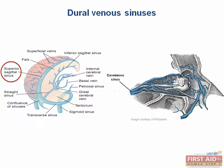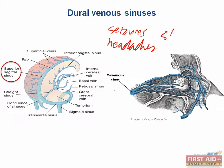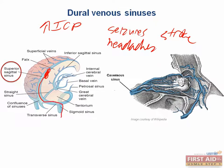Sagittal sinus thrombosis is caused by hypercoagulable disorders, especially in pregnant women. These patients present with seizures, headaches, and strokes. This is due to increased intracranial pressure that accumulates due to blockage of the primary path through which fluid must exit the brain.